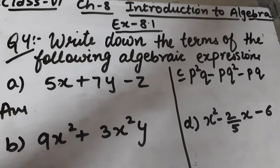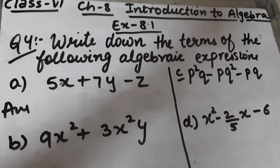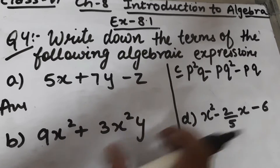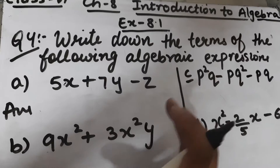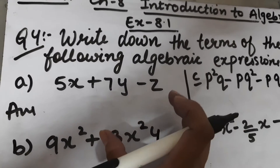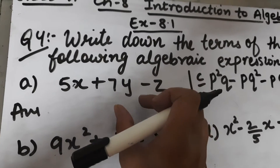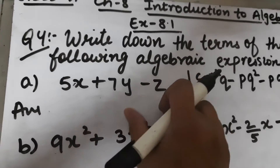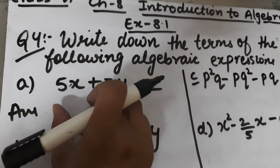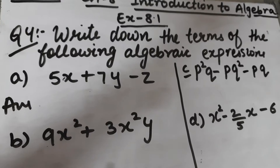Let's start question number 4 of exercise 8.1. The question asks us to write down the terms of the following algebraic expressions. The terms of an algebraic expression are the parts of the expression that are connected by a plus or minus sign.